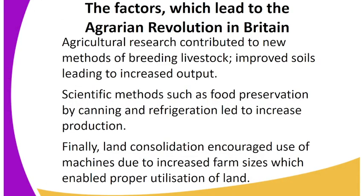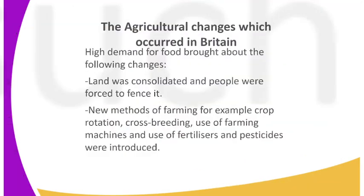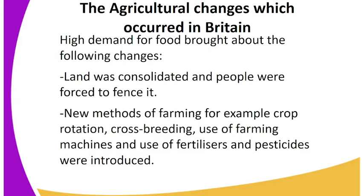The replacement of the open field system by the enclosure system enabled farmers to improve their property without growth being hindered by neighbors. Agricultural research contributed to new methods of breeding livestock and improving soil, leading to increased output. Scientific methods such as food preservation by canning and refrigeration led to increased production.